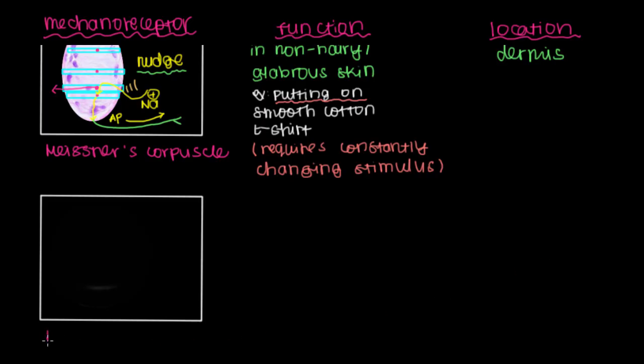The next mechanoreceptor is called Pacinian's corpuscle. So Pacinian's, and this is another corpuscle, another body we're going to talk about right here.